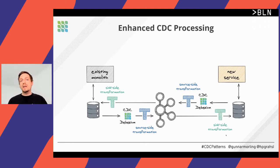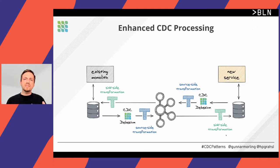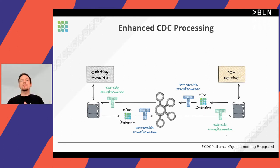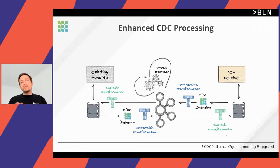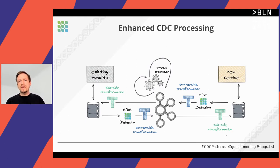Typical modifications using SMTs include including or excluding a subset of the change event payload, renaming fields, changing data types, masking sensitive data, or fully encrypting data. SMTs can be applied on both the source side going into Kafka and the sink side coming out of Kafka. For joining parent-child relationships commonly found in relational databases, we could use a Kafka Streams application to join records based on their foreign key relationships and propagate coherent aggregates toward the sink.